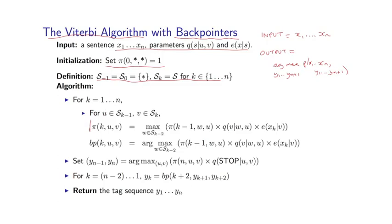And the only change to the algorithm is that in addition to recording pi at each value of k u v, we also store a back pointer, which I'll call bp of k u v. And that is the argmax. So that's actually going to record which tag achieved this max, which tag was most likely at position k minus 2, given the fact that I have u and v at position k.